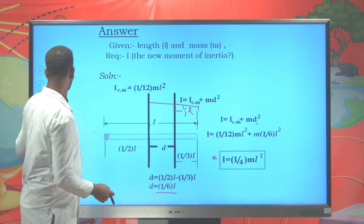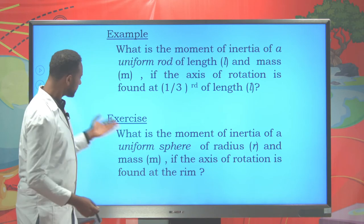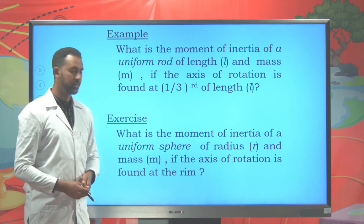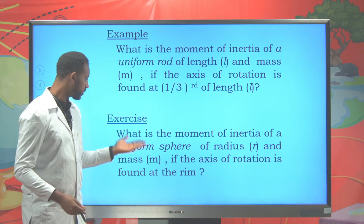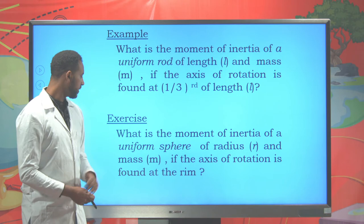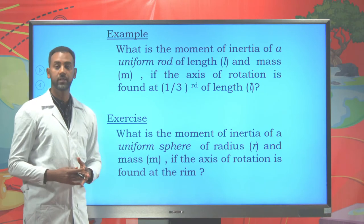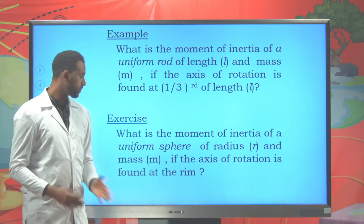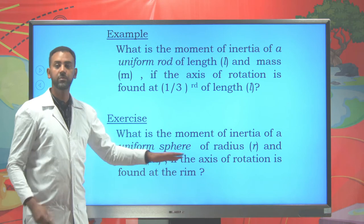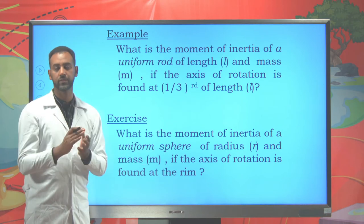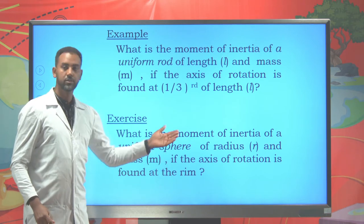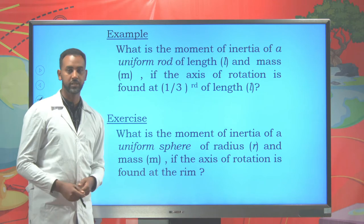You can practice this as an exercise. What is the moment of inertia of a uniform sphere of radius r, if the axis of rotation is found at the rim or at the surface of the sphere? Please try this.